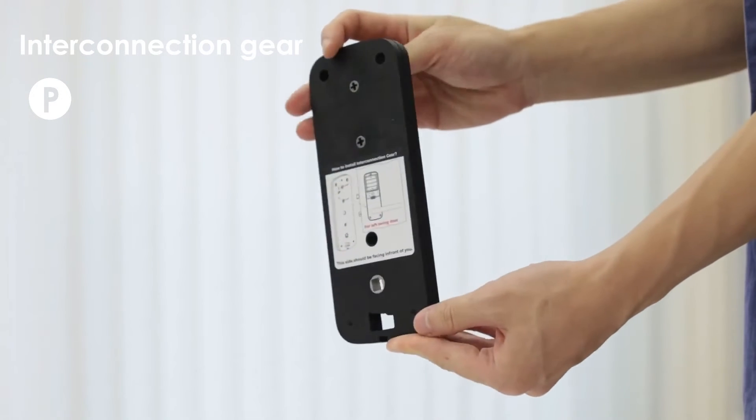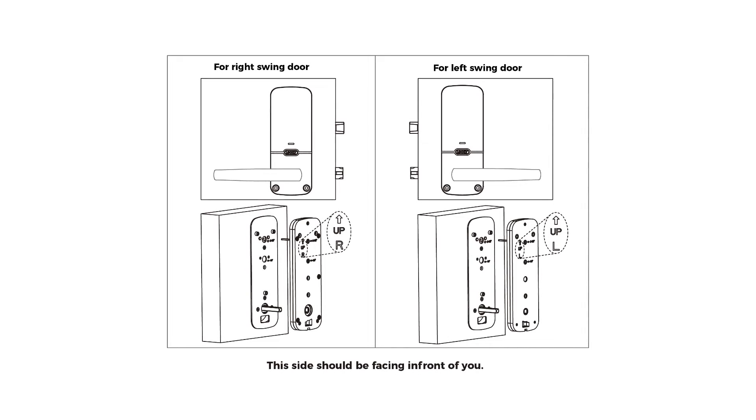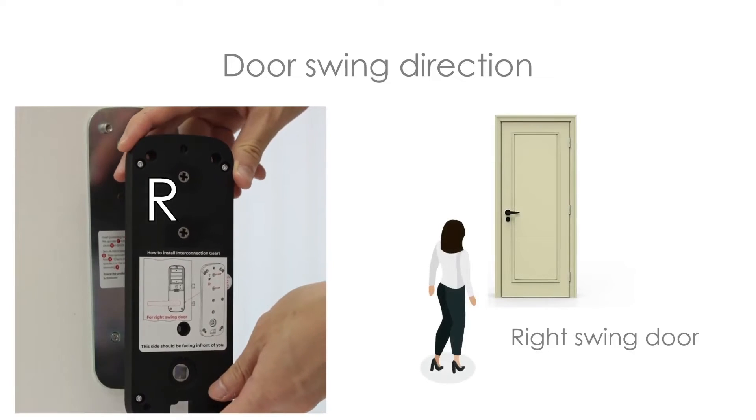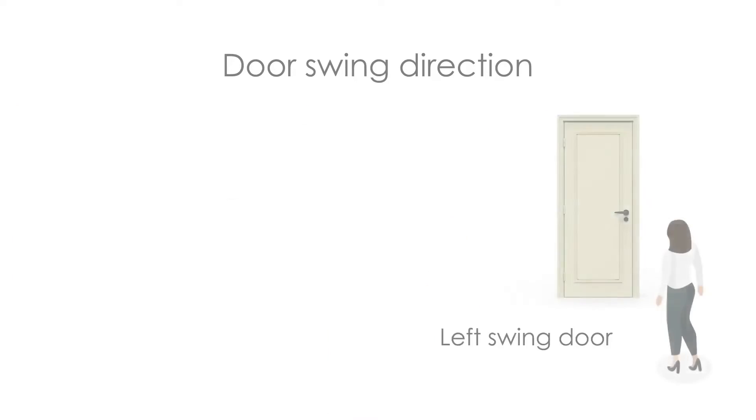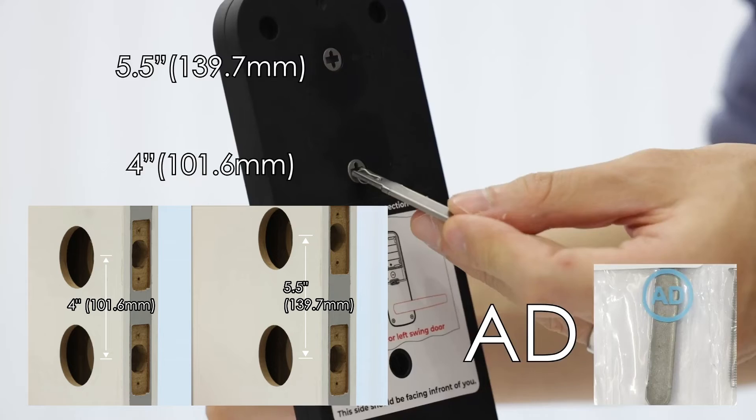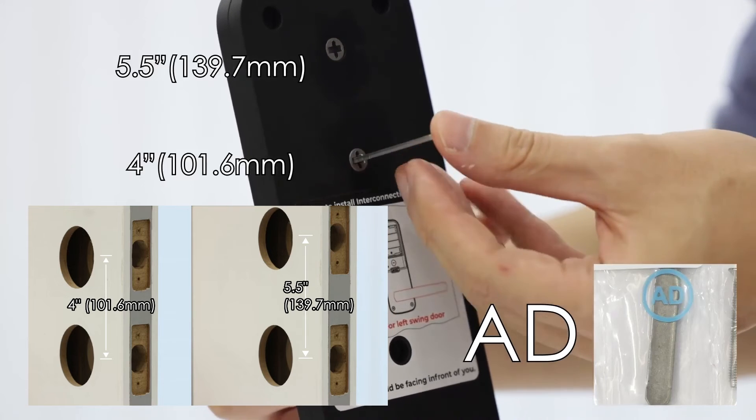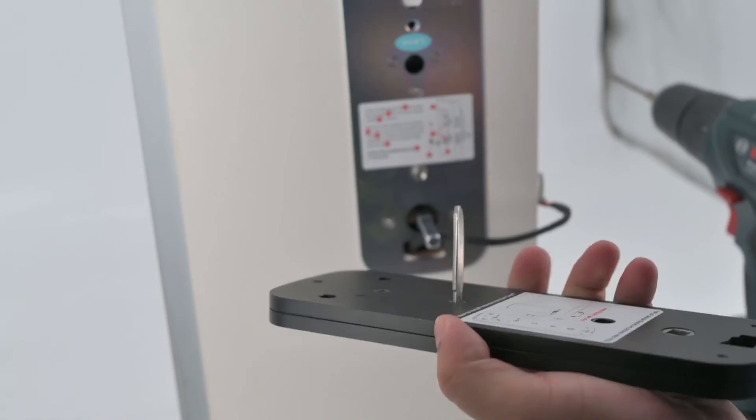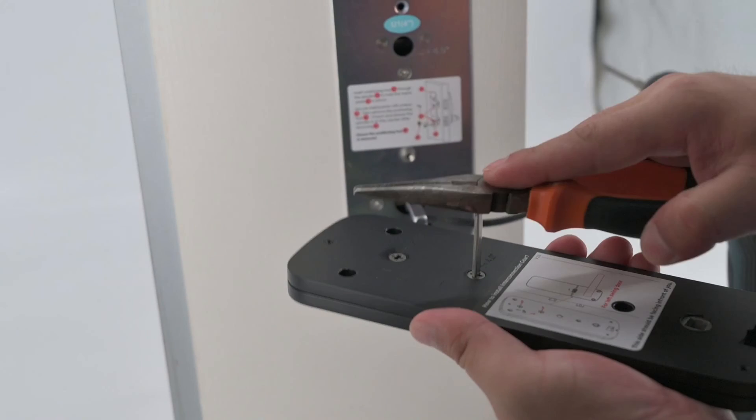Select the side of the interconnection plate gear P according to door handle orientation. If you have a right swing door, the R side should be facing in front of you. If you have a left swing door, the L side should be facing in front of you. Insert torque blade AD to interconnection plate according to the distance between the latch bolt and deadbolt, 4 or 5.5 inches. To ensure torque blade AD is tightly inserted, use pliers and strike torque blade to insert into the hole.